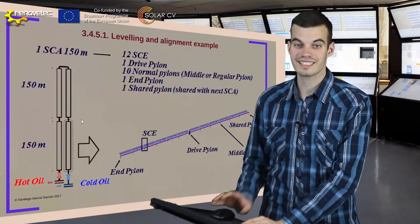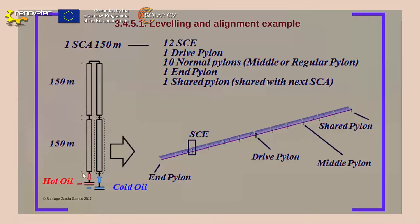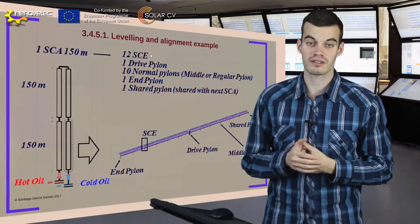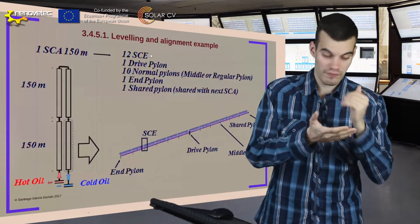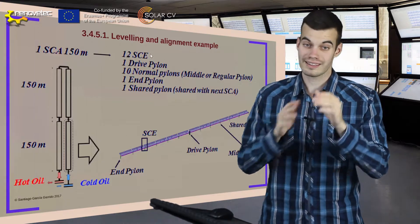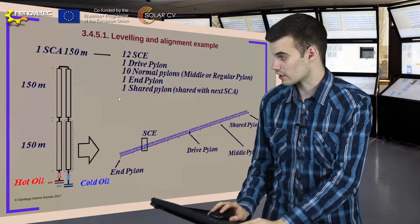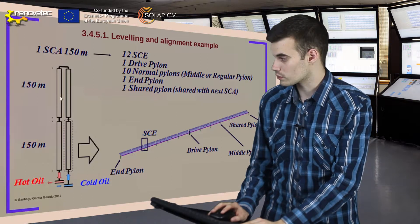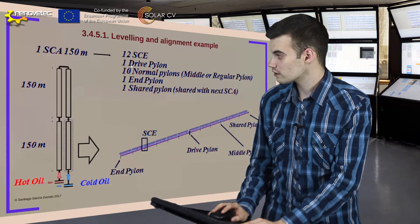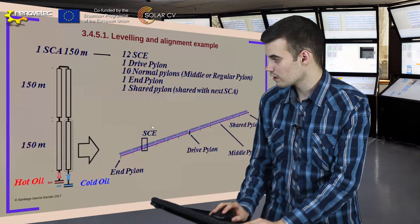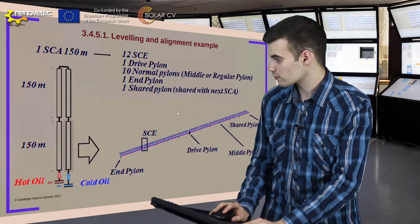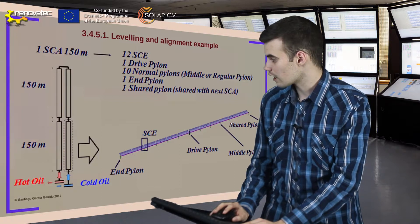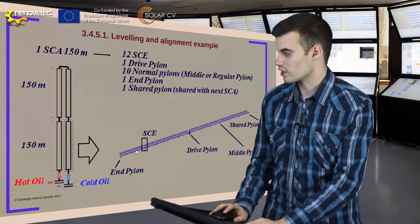Finally, here we can see an example of a loop. Each collector has a length of 150 meters and each collector has 12 SCE. Because of what we discussed previously, if each collector has 12 modules, the loop is going to have four collectors — and here we can verify this concept: one, two, three, and four collectors. Here we can see some drive pylons located between both collectors and end pylons, and some middle pylons which are going to join the different modules.